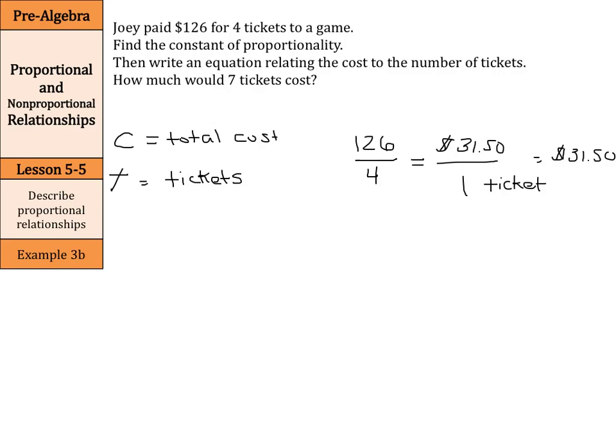When it comes to writing our equation, very similar to the last one, we're going to say our total cost C is going to equal that $31.50 per ticket times T, the number of tickets. Now that we have our equation, we're looking for the seven-ticket cost. We can put that seven in for T. Cost is going to equal $31.50 times seven. $31.50 times seven is $220.50.